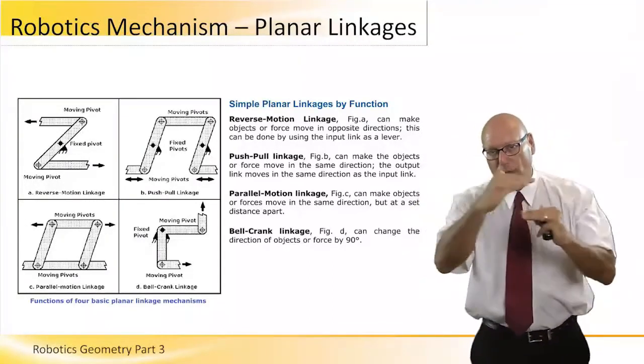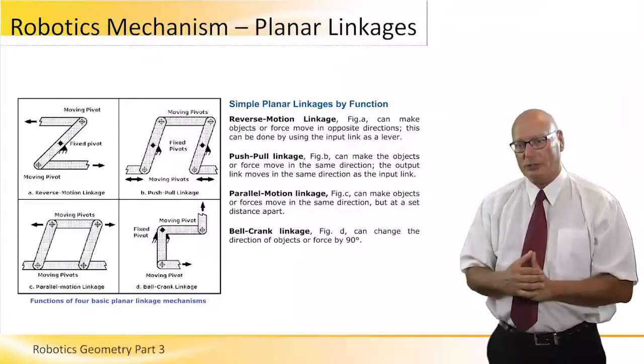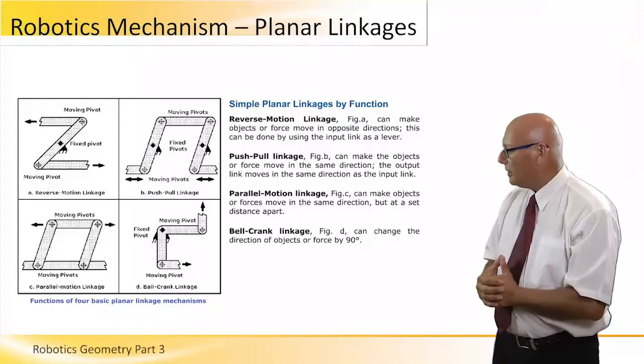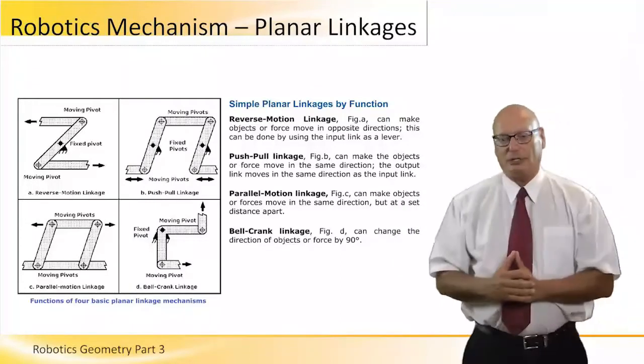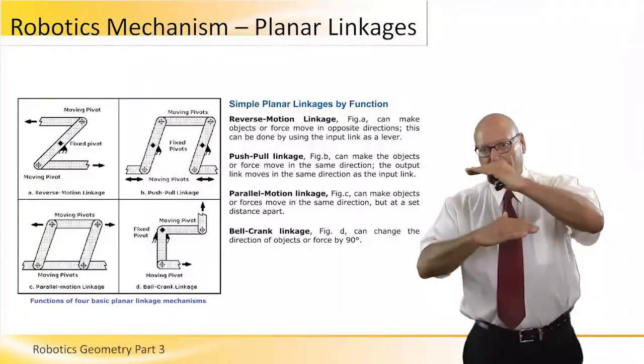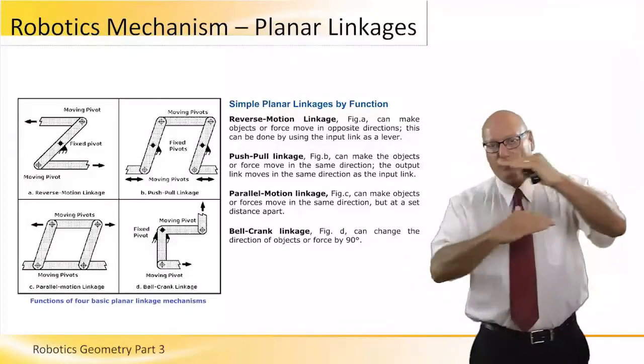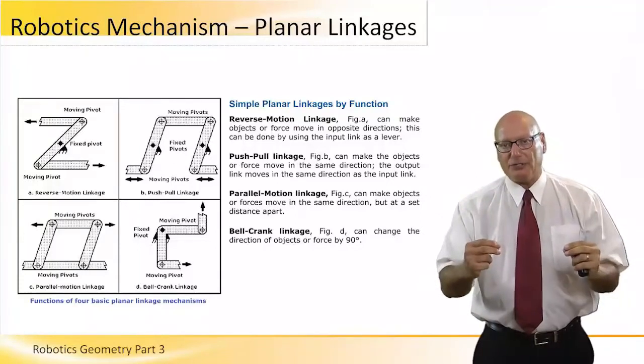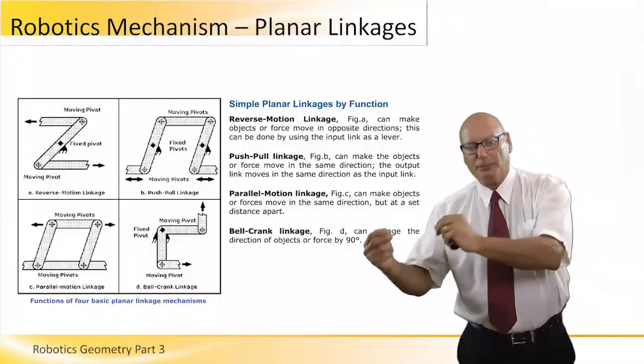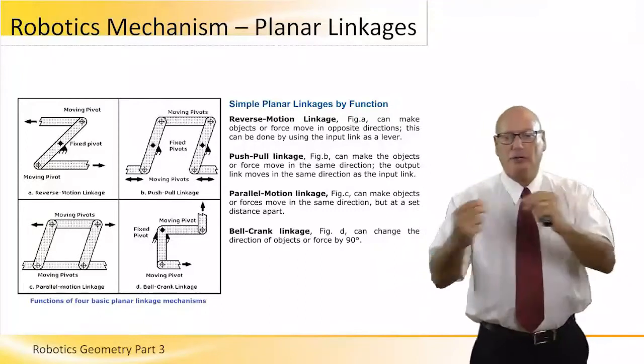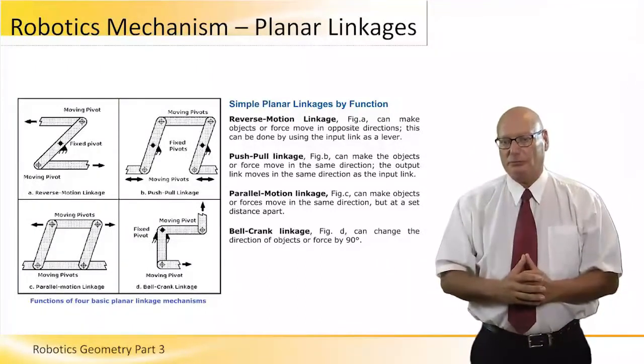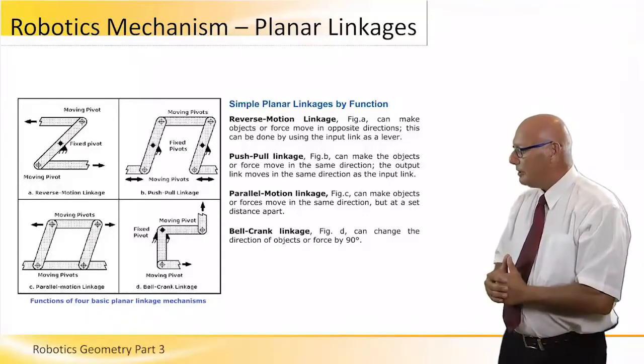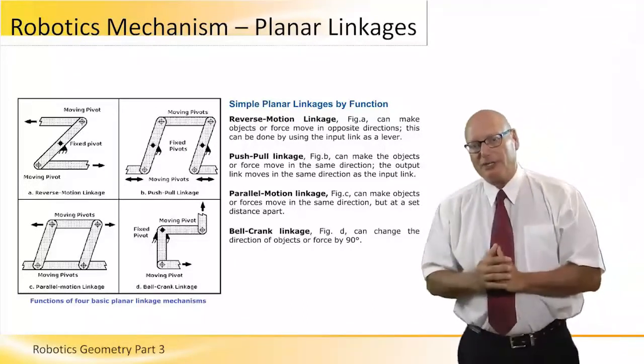The picture on the bottom left is called parallel motion linkage. We have two sets of lines in parallel. One part is moving, the other part moves in the same direction. The fourth one is bell crank linkage, changing the direction of movement 90 degrees.